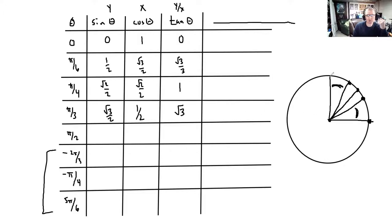Next angle is π/2, so we're all the way straight up here at the point 0, 1. So the sine, well, that's now 1. Cosine is now 0. And the fraction 1 over 0 is undefined.